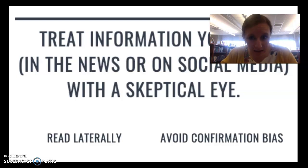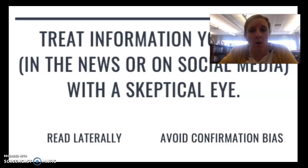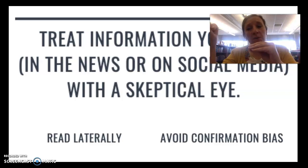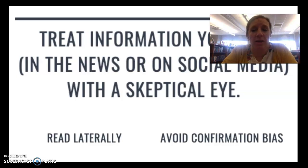The two biggest things to look out for when evaluating information online are: number one, read laterally — which means you do not just read the source you are viewing, but open up new tabs and investigate the author, the organization, and any claims they make. And second, avoid your own confirmation bias and look for perspectives outside of your own.